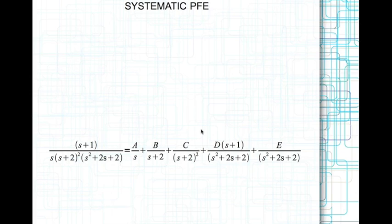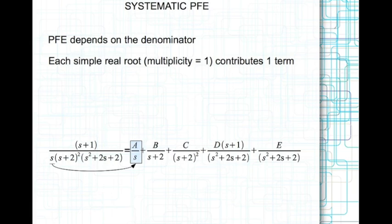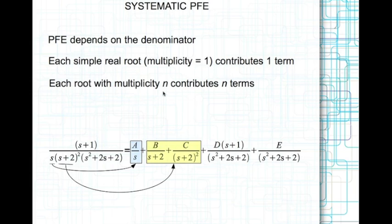Let's look at systematic partial fraction expansion. Partial fraction expansion depends on the denominator only. Each simple real root with multiplicity 1 contributes one term — so s contributes a divided by s. Each root with multiplicity n contributes n terms. So (s plus 2) squared contributes two terms: p divided by (s plus 2) plus c divided by (s plus 2) squared. If it were (s plus 2) cubed, there would be an additional term with denominator (s plus 2) cubed.